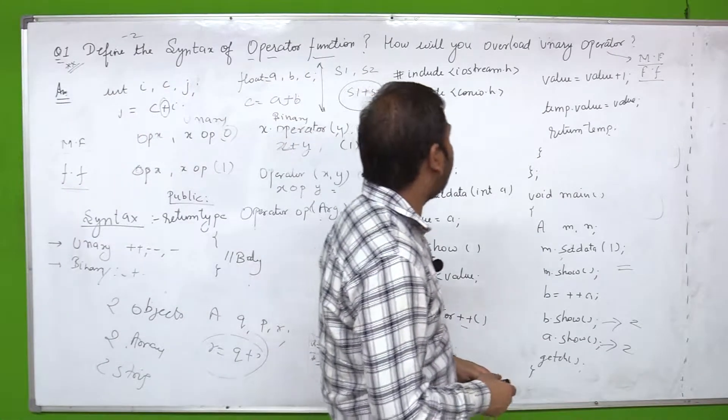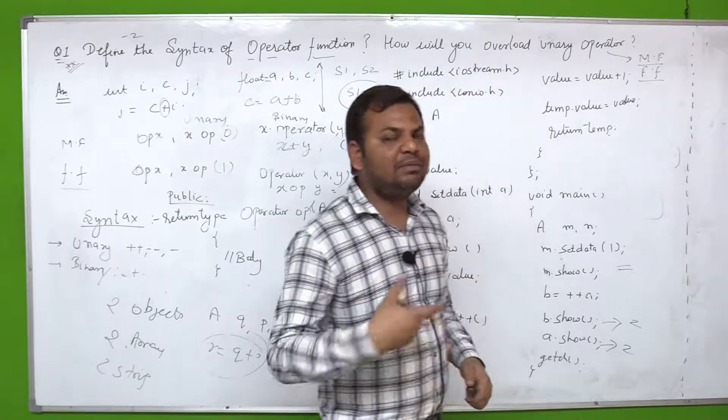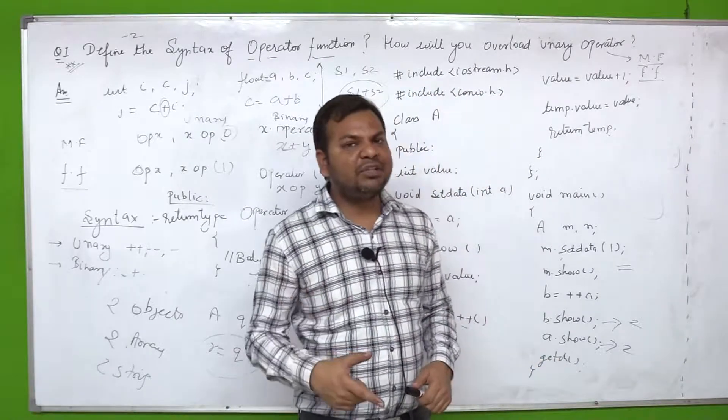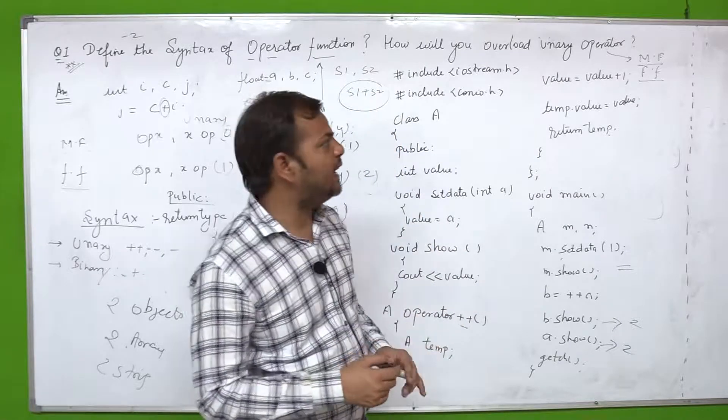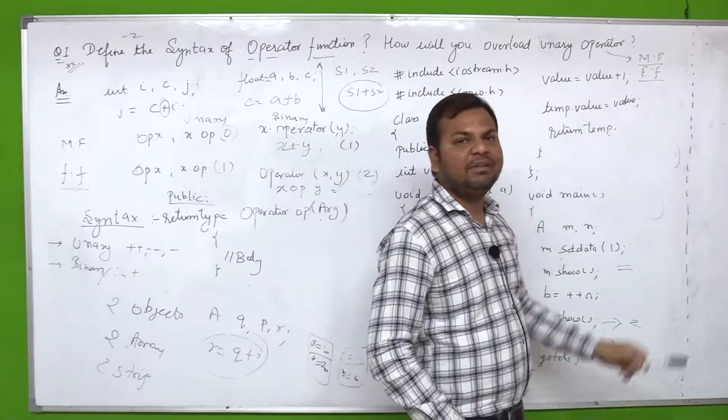This is the difference that how friend function and member functions are used to overload an operator. Question next is how will you overload unary operator. So first thing is that it can be through member function or through friend function.